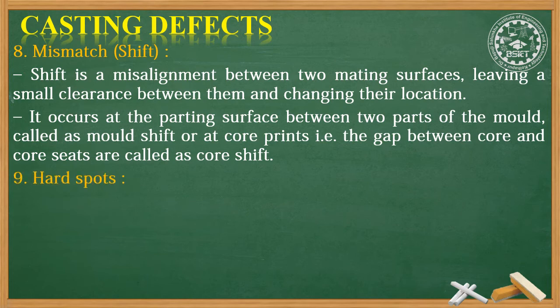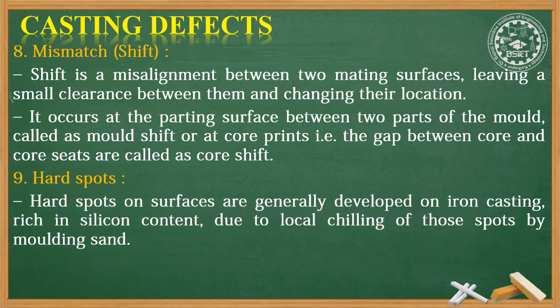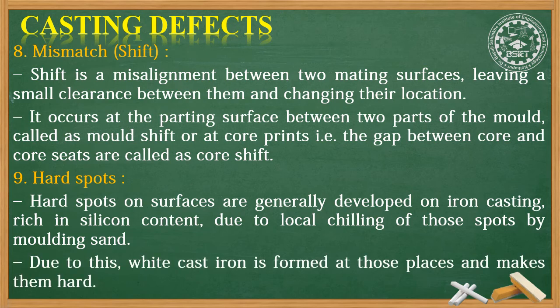Number nine is hard spots. Hard spots on surfaces are generally developed in iron castings rich in silicon content due to local chilling of these spots by molding sand. Due to this, white cast iron is formed at those places and makes them hard.